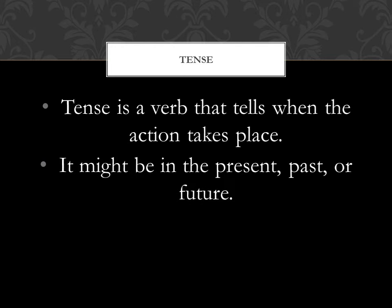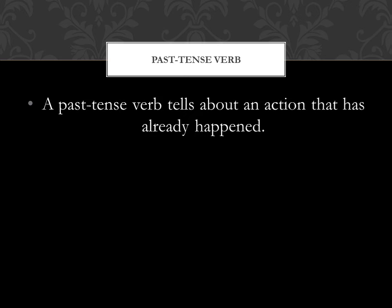Today we're going to concentrate on the past tense. Past is something that happened yesterday, or five minutes ago, or two minutes ago, maybe last week, maybe last year, maybe last month — something that happened a while ago, something that happened and it passed on. So a past tense verb tells about an action that has already happened. It happened and it finished.